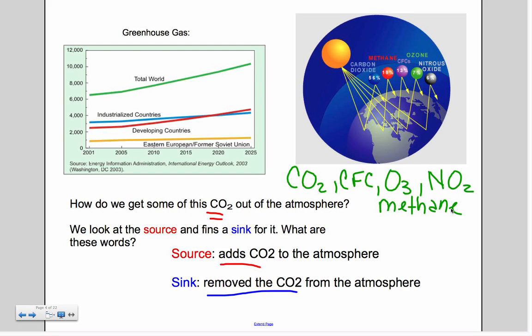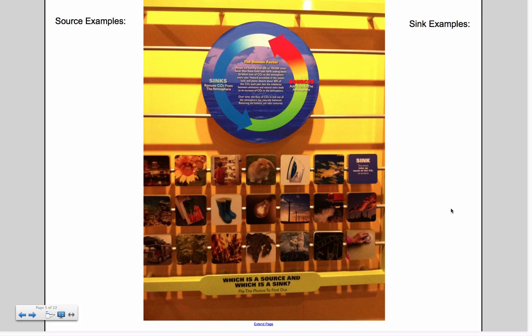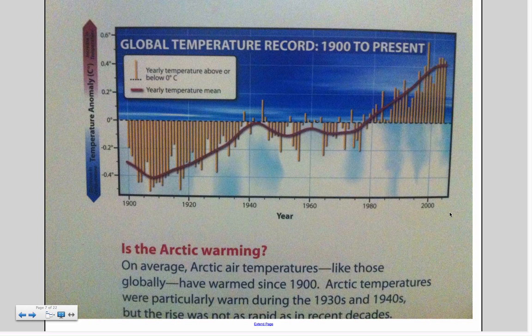Two vocabulary words are on this slide. A CO2 source is something that adds carbon dioxide back into the atmosphere. A CO2 sink is something that removes carbon dioxide from the atmosphere. You'll need to pause and make a T-chart with at least four examples of a CO2 source and four examples of a CO2 sink.